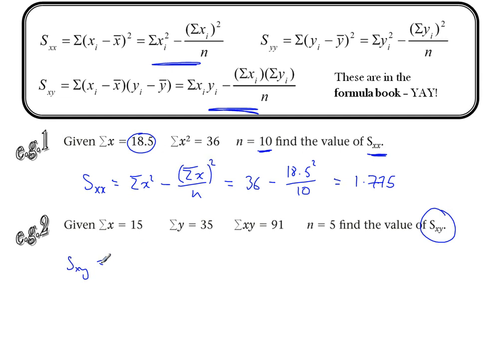SXY. We're looking at the definition. I've got to do the sum of all my X and Y values multiplied together. So this is this bit, sigma XY, minus sigma X times sigma Y, over N. Okay, so sigma XY is 91, minus sigma X, which is 15, times sigma Y, which is 35, and divide that by 5. That's how many values we had. And that comes to minus 14.